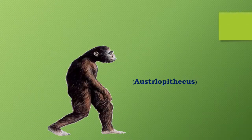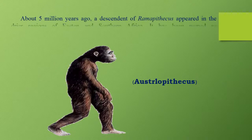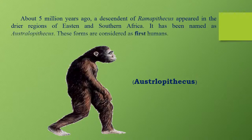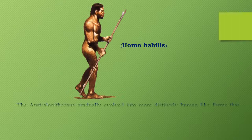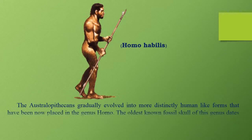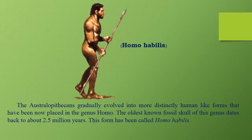About 5 million years ago, a descendant of Ramapithecus appeared in the drier regions of eastern and southern Africa, named Australopithecus. These forms are considered the first humans. Australopithecus gradually evolved into more distinctly human-like forms placed in the genus Homo. The oldest known fossil skull of this genus dates back to about 2.5 million years, and this form has been called Homo habilis.